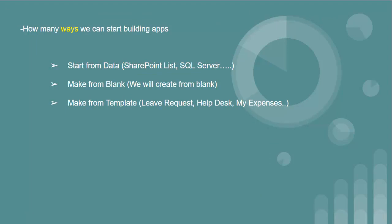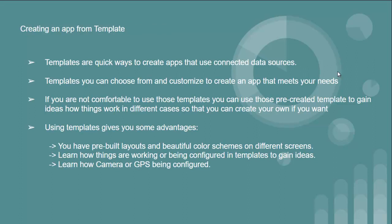In Power Apps we have three different methods: we can start from data, we can make from blank, and we can make from template. In this video I am going to discuss make from template. There are so many templates in Power Apps we can use — for example, leave request, helpdesk, my expenses, and many more. Templates are quick ways to create apps that use connected data sources, which you can choose from and customize to create an app that meets your needs.